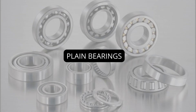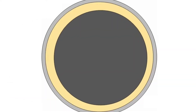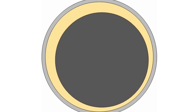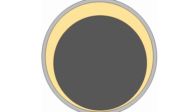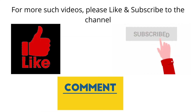Plane bearings consist of a shaft rotating in a hole. There are several specific styles such as bushing, journal bearing, sleeve bearing, rifle bearing, and composite bearing. It is the simplest type of bearing, comprising just a bearing surface and no rolling elements. Therefore, the journal — that is, the part of the shaft in contact with the bearing — slides over the bearing surface.